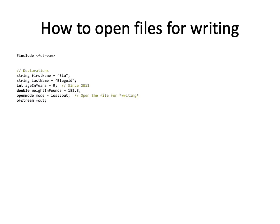We're going to go through an example of how to open a file for writing. The first thing to do is to #include fstream, the header file that defines the ifstream and ofstream classes, which are new data types with all kinds of capabilities. Once we've done that, we need data to write to the file — so let's make some: a first name string 'Blue', a last name string 'BlueGold', an int for age in years, and a weight in pounds. Then there are two new variables related to the file stream itself.